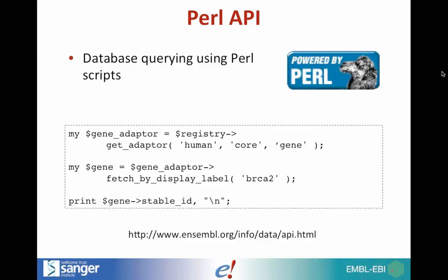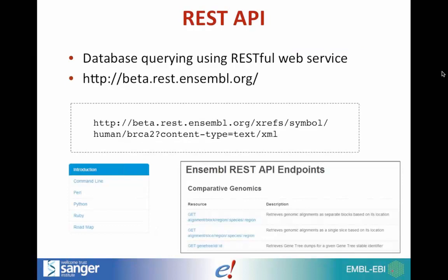We also have a REST API, which is even easier than the Perl API because you don't need to know a programming language — you can use it from the command line. It's still in beta, so we invite you to try it and give feedback. It has a growing number of endpoints; you can get alignments from comparative genomics, sequences, and more. It supports a variety of languages including command line, Perl, Python, and Ruby.